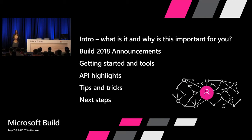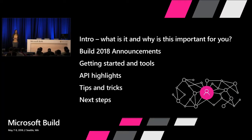So this is our agenda for today. First I'm going to quickly cover what is Microsoft Graph, then what's new for Build 2018, then as a developer how do you get started with Microsoft Graph — what are the first things you can do to get from zero to sixty. Then we'll go to different API highlights from the different services in Microsoft Graph, then tips and tricks on interacting with Microsoft Graph, and finally next steps in terms of other sessions throughout the conference and things at the booth.